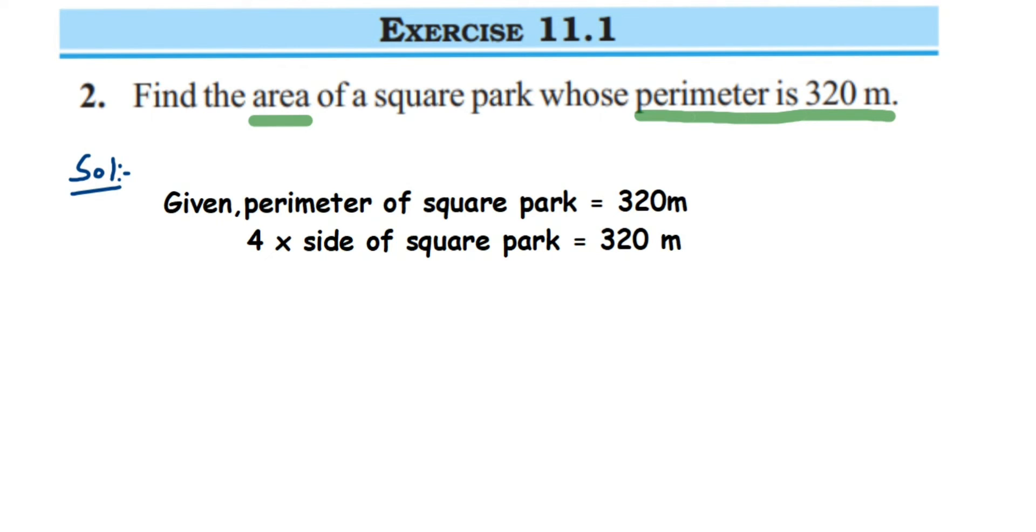We don't want 4 on the left-hand side, so we are going to transpose this 4 to the right-hand side. When you transpose a number in multiplication to the other side, it comes in division.